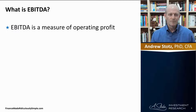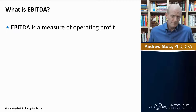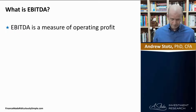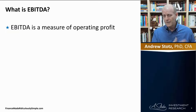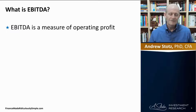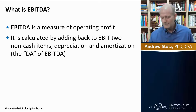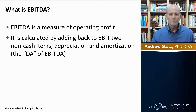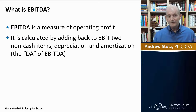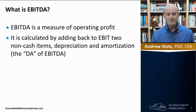So what is EBITDA? It's just a measure of operating profit. We've already seen the measure called EBIT, which is the operating profit — EBITDA is just a modified EBIT. The modification is that you add back two non-cash items: depreciation and amortization. That's the DA in EBITDA.